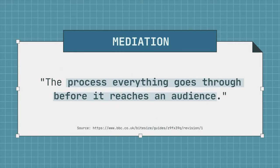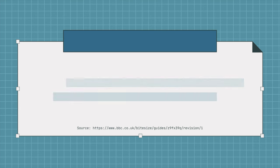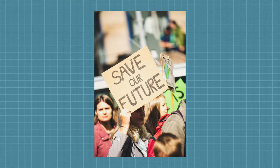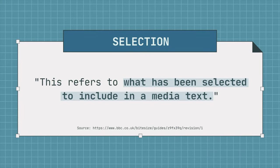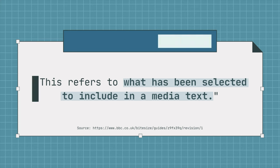Mediation: this is the process the media message goes through before it reaches the audience. This can be how a film or TV script is written and rewritten before it makes it to production, or how photos in print are cropped or captioned, or even how real-life events like a protest or a speech are portrayed in a news report. Selection: this refers to what has been selected to be included in a media message. This can be particularly important in news articles, where selecting certain facts over others can change the angle of a story. What is omitted can be just as important as what is included.